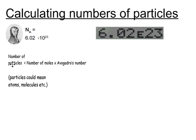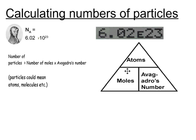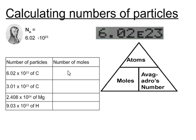We can rearrange this equation to work out the number of moles that we have. So if we know the number of particles, atoms or molecules, then we can divide that by Avogadro's constant to give us the moles. So pause the video and try to work out how many moles we have for these.